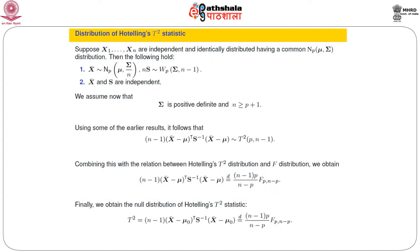In order to talk about the Hotelling T-square statistic, we note that the expression involved the inverse of the S matrix. For a Wishart distribution, we can talk about its inverse provided the degrees of freedom are sufficiently large—meaning n minus 1 ≥ P and the underlying scale matrix is positive definite. We assume sigma is positive definite and n ≥ P + 1. Using the earlier results, it follows that (n-1)(X̄ - μ)' S⁻¹ (X̄ - μ) has a Hotelling T-square distribution with parameters P and n minus 1. The calculation is straightforward and is left to the students.